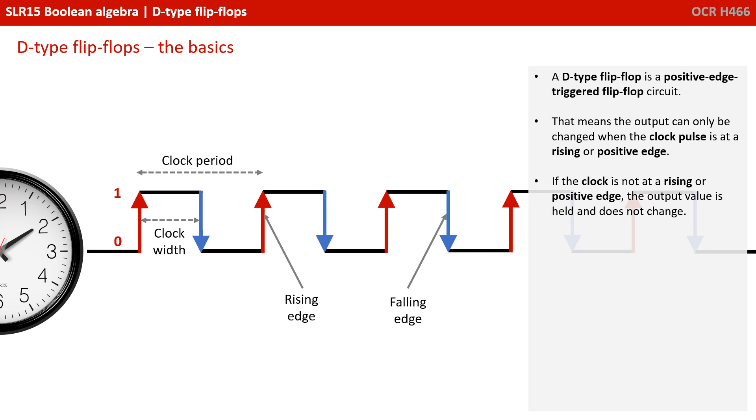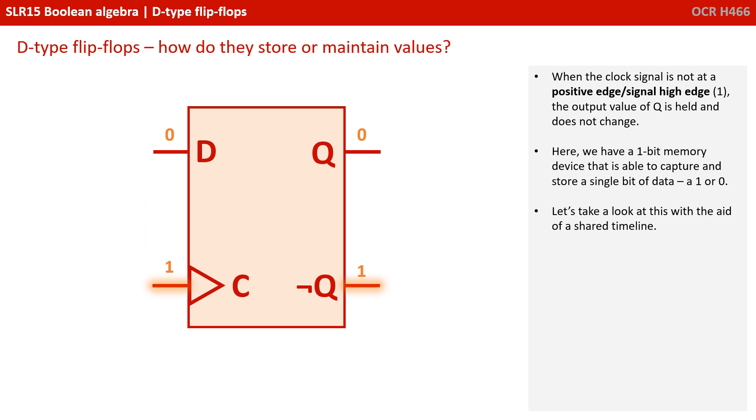The D-type flip-flop is what's known as a positive edge triggered flip-flop circuit. That means the output can only be changed when the clock pulse is at the rising or positive edge. If the clock is not at a rising or positive edge, the output value is held and does not change. When the clock signal is not at a positive edge, so at 1, the output value of Q is held and does not change.